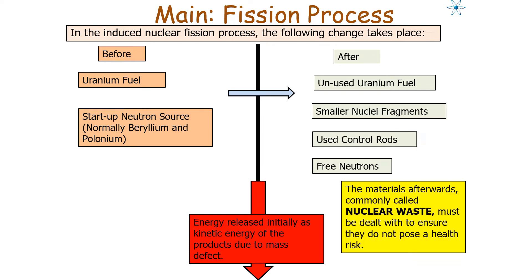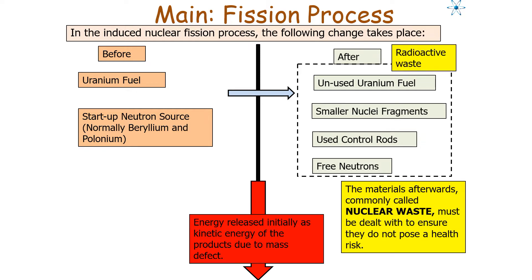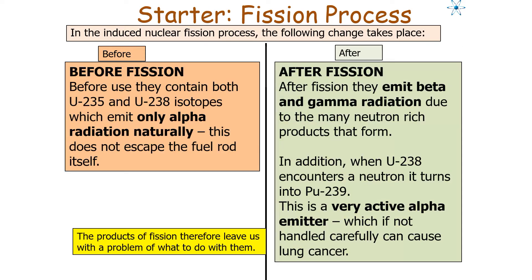The material produced afterwards is commonly called nuclear or radioactive waste, and it must be dealt with to ensure it doesn't pose a health risk to humans or the environment. Before fission, uranium-235 and uranium-238 isotopes only emit alpha radiation naturally, and this won't actually escape the fuel rod casing.